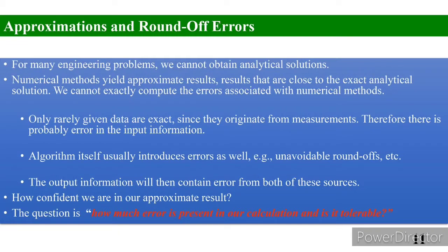وہ error rate ہمیشہ موجود ہوتا ہے اور وہ error rate کتنا ہے، یہ سب چیزیں جاننے کے لیے پہلے ہمیں types of errors کو دیکھنا پڑے گا۔ جب ہمارے پاس solution آتا ہے تو وہ ایک approximate result ہوتا ہے اور result میں کتنا error آیا ہے، یہ ہمارے model پر depend کرتا ہے۔ ایک accurate model وہ ہے جس کے اندر error rate کم سے کم ہو۔